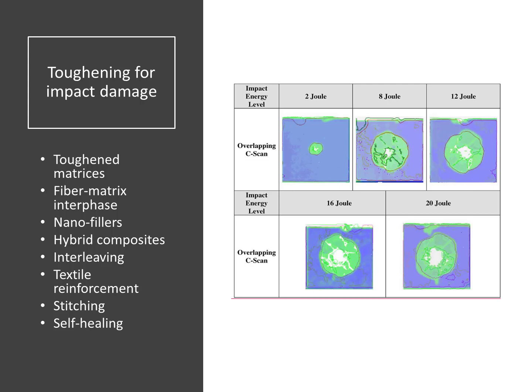Low velocity impact of laminated composites often leads to delaminations in the composite. Delaminations are detrimental to the load carrying capacity of the composite, especially if the laminate is loaded in compression. Toughening for impact damage is a process by which delaminations are either delayed or healed. Eight methods are listed in this viewgraph. The first seven are methods to delay the onset and/or propagation of delaminations, while only the last method deals with healing the delamination. There is a separate chapter dedicated to self-healing as it applies to other types of damage besides delaminations. Toughening for impact damage remains a very active area of R&D.